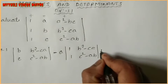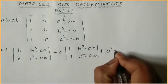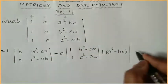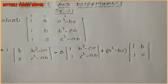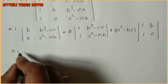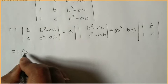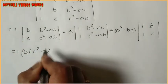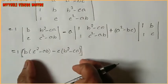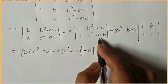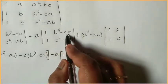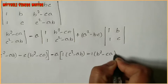The third term is here. That is a²-bc. So this is a²-bc. The next step: 1 into (c²-ab), and then in between minus symbol, 1 into (b²-ca). After that the final term: 1 into (c²-ab) minus 1 into (b²-ca).